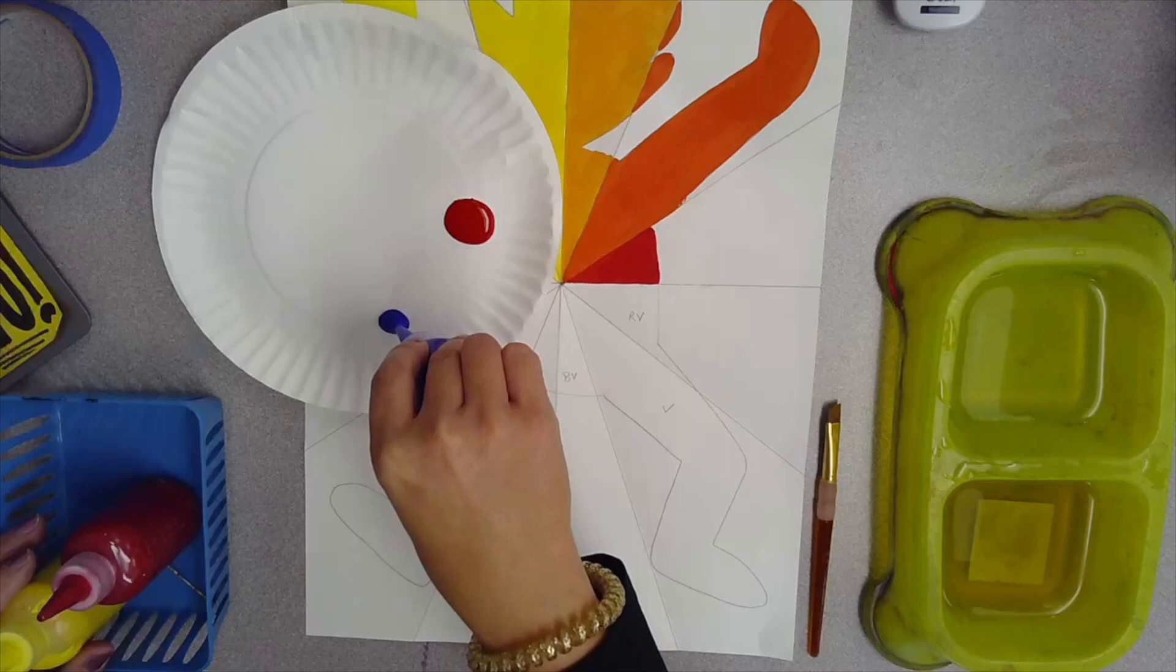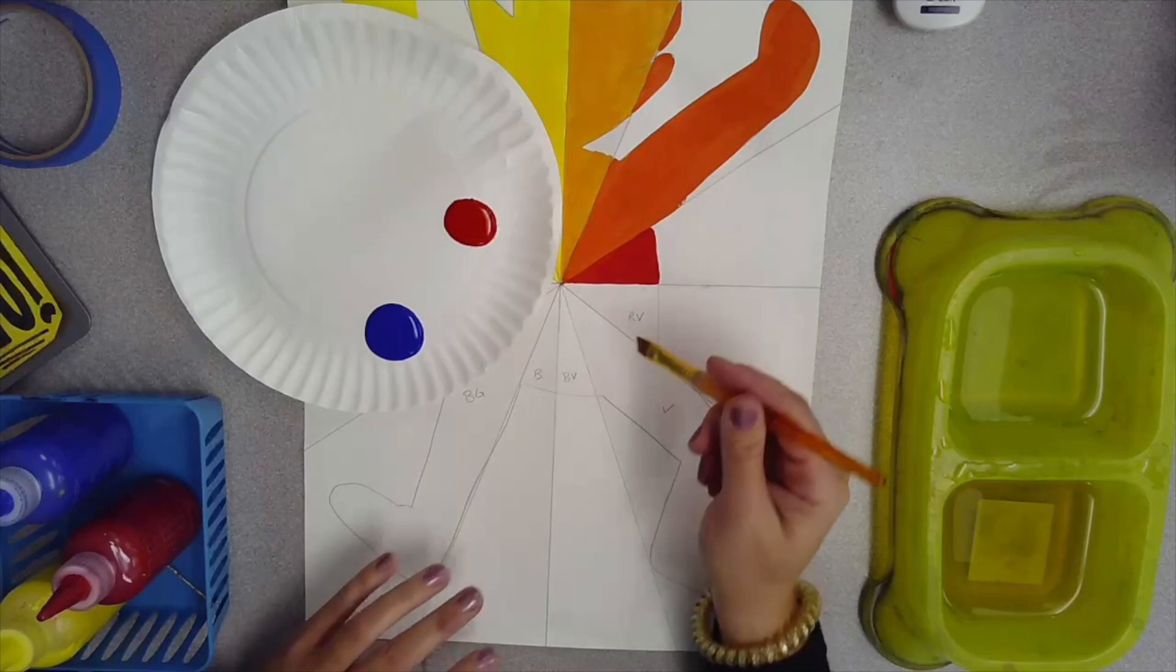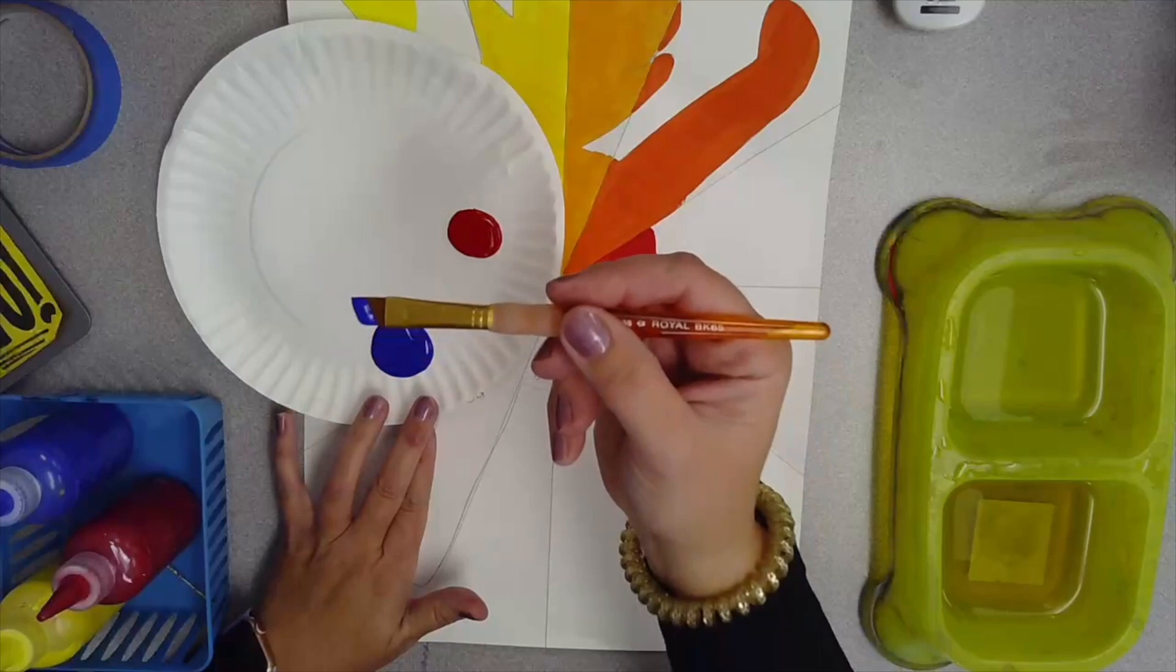Red and blue make purple or violet, which is the same thing. Blue is very dominant, so we want to start with adding just a little bit of blue to all of your red.